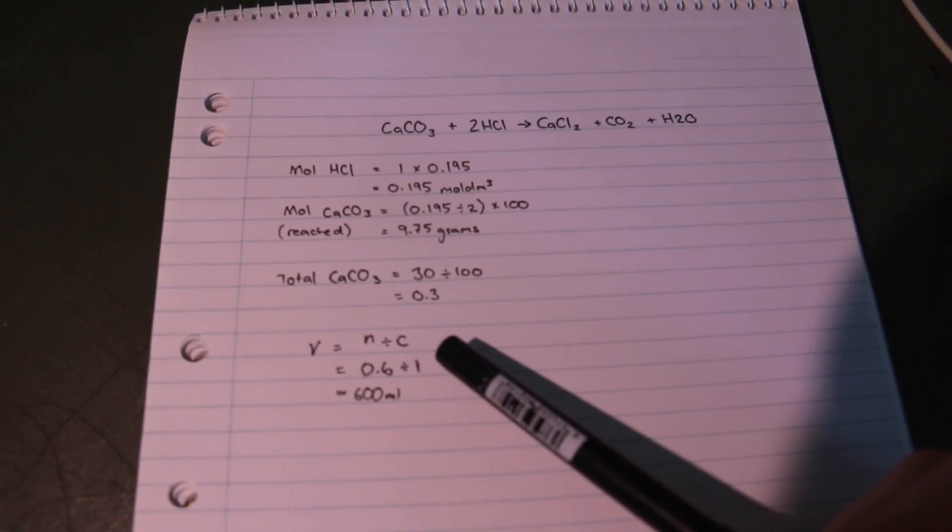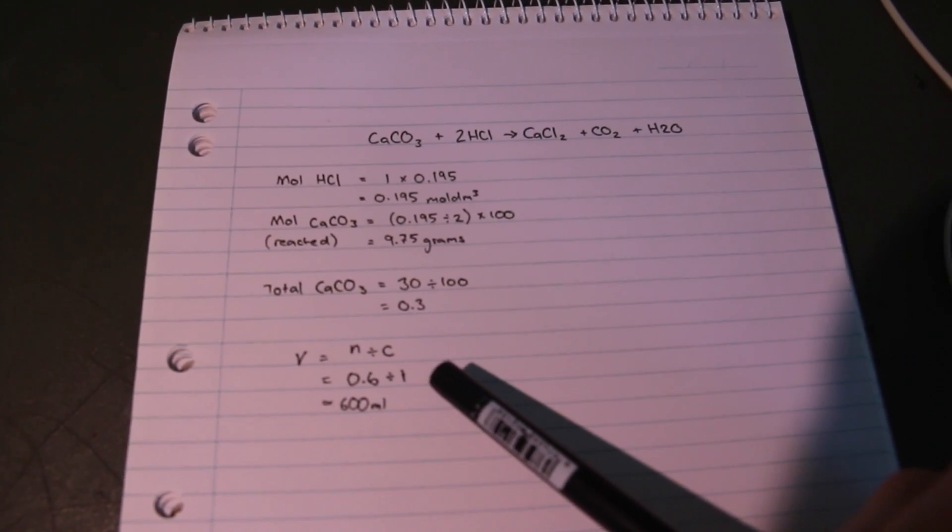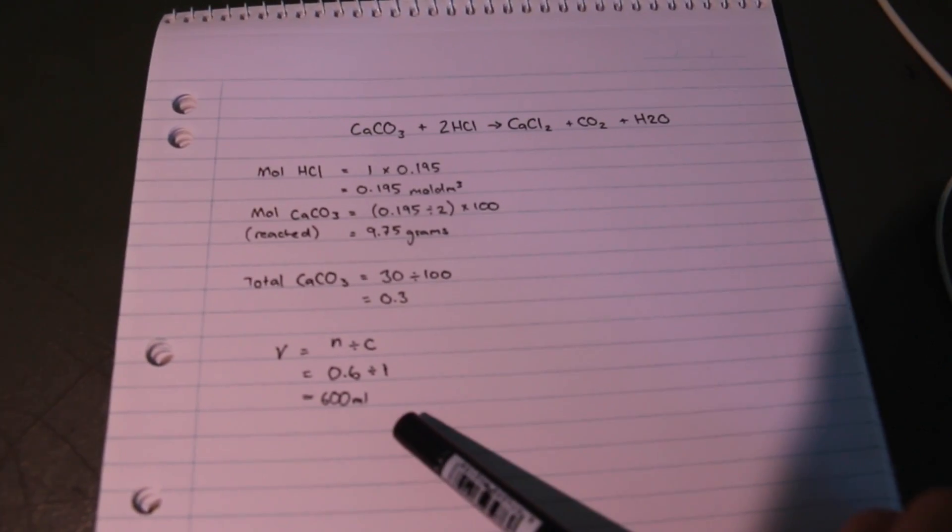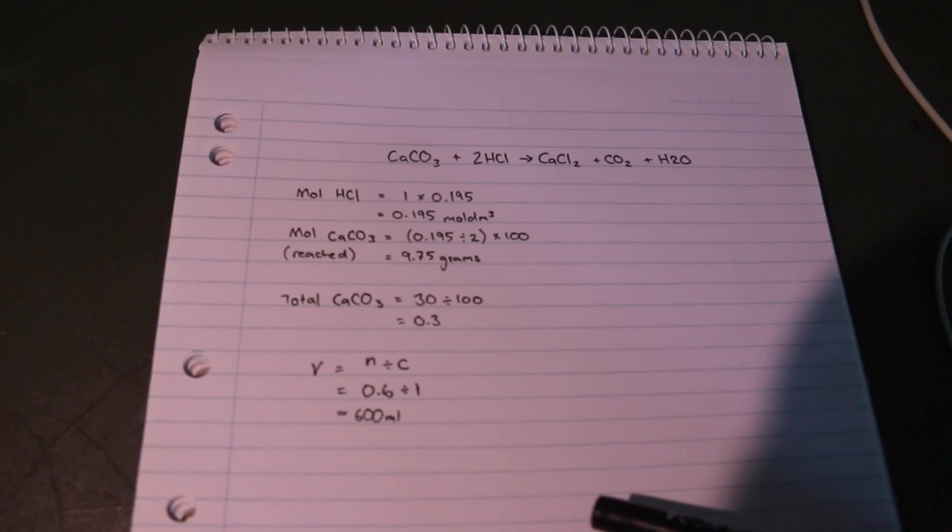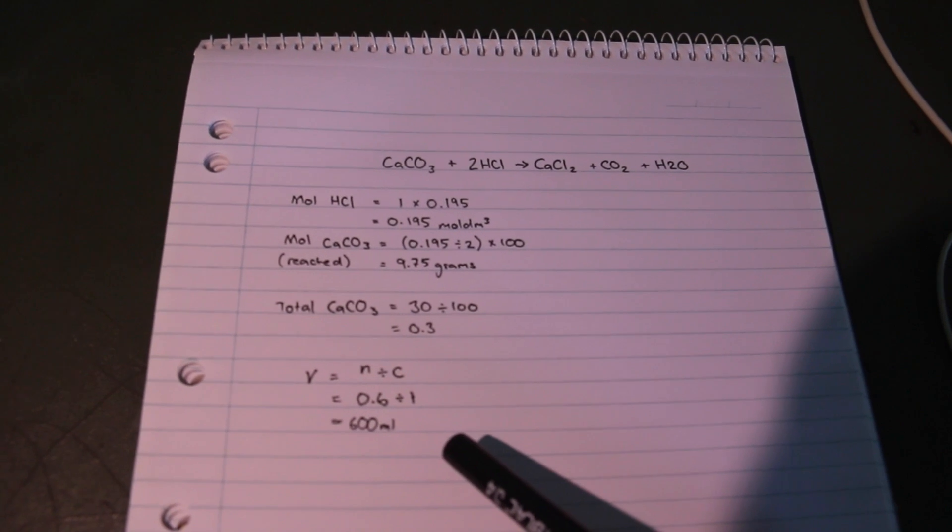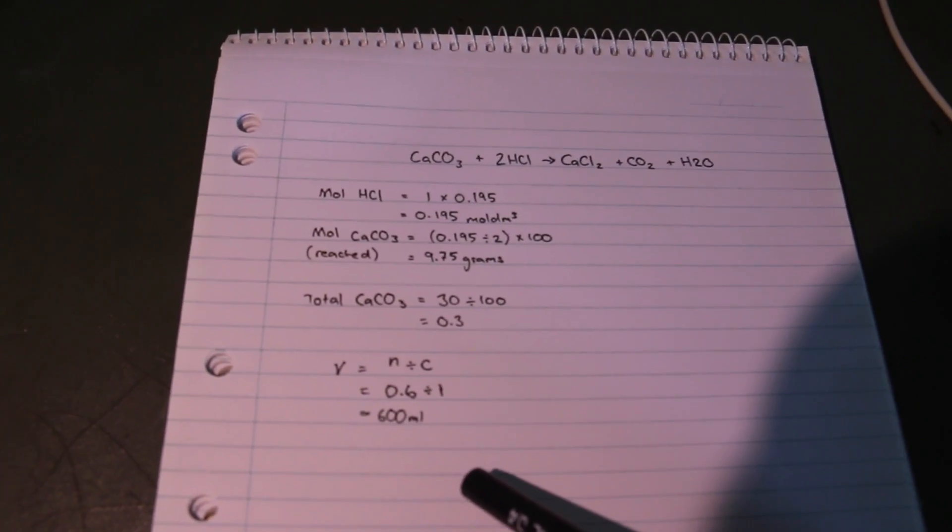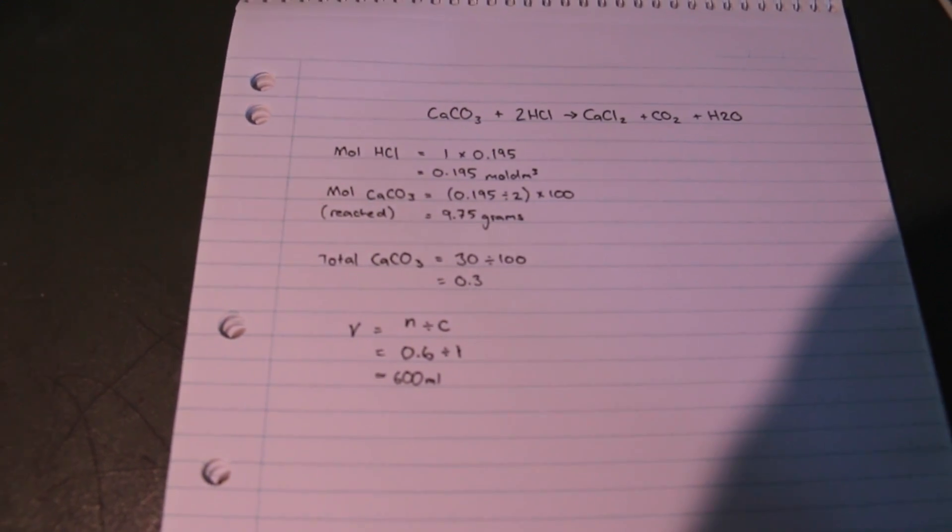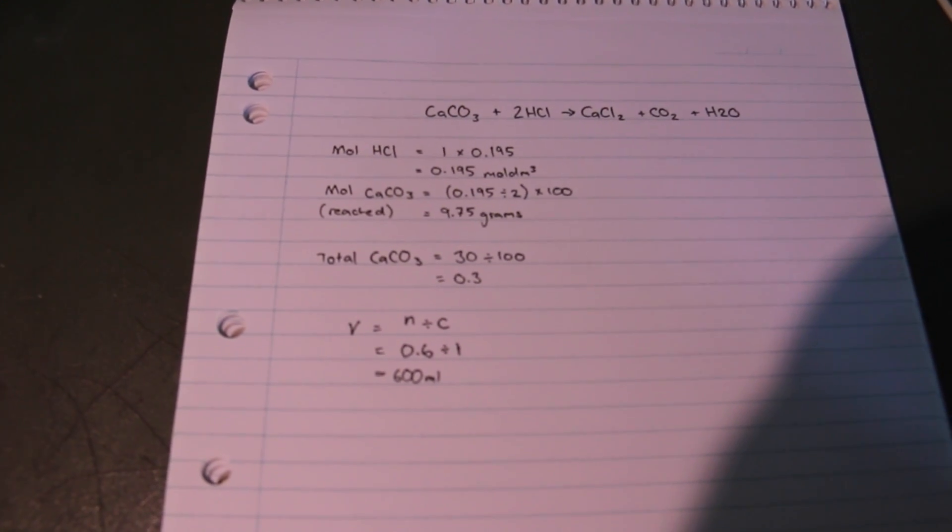Therefore, 0.6 divided by one, which is the concentration of the hydrochloric acid, leaves me with 600 milliliters required. This of course is a little bit over what's required because the rock is not pure calcium carbonate. I'd like to try dissolving whole rocks with very high concentrations of acid soon.